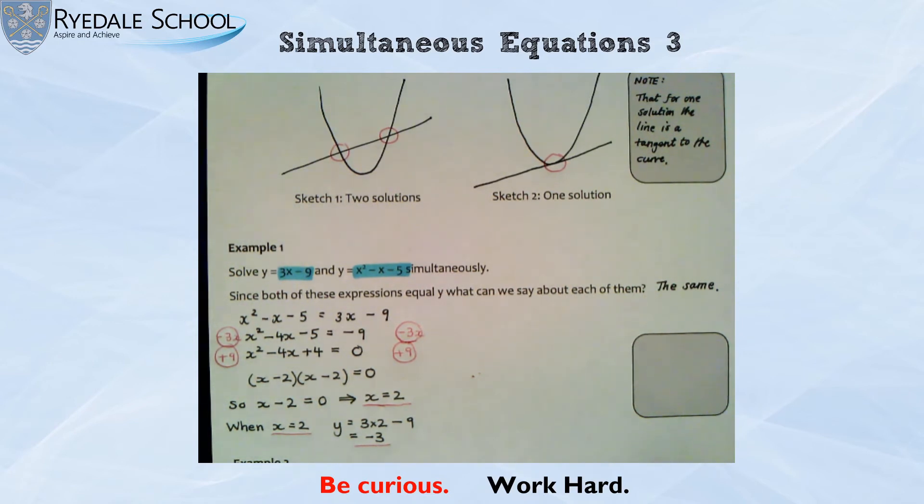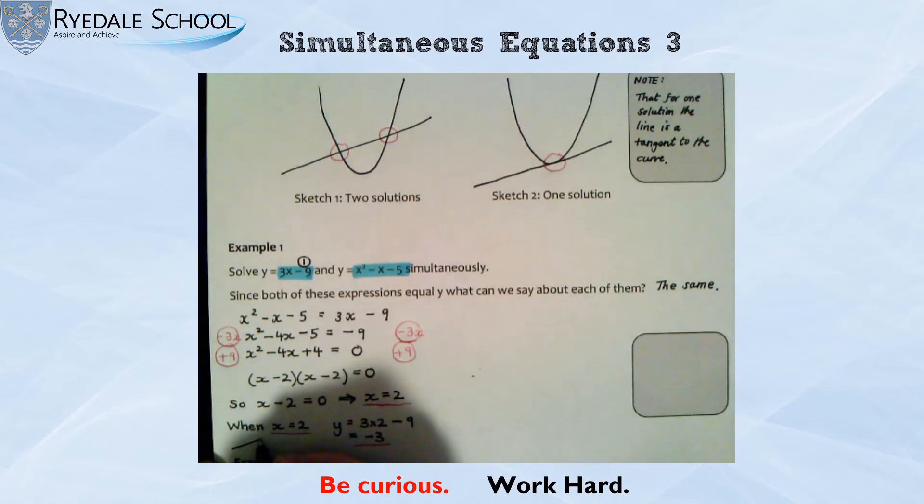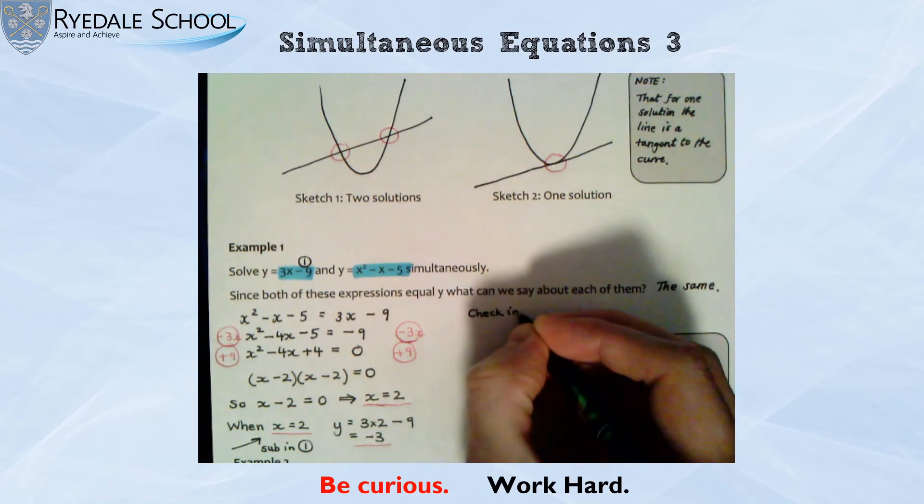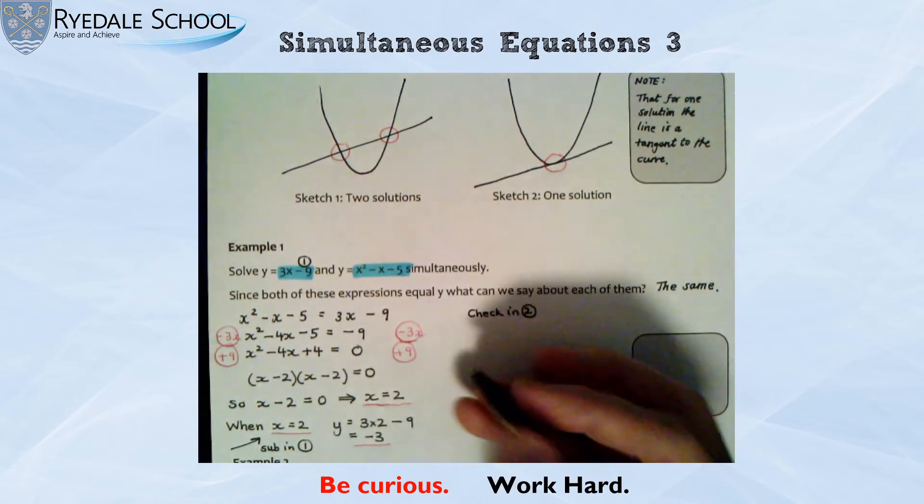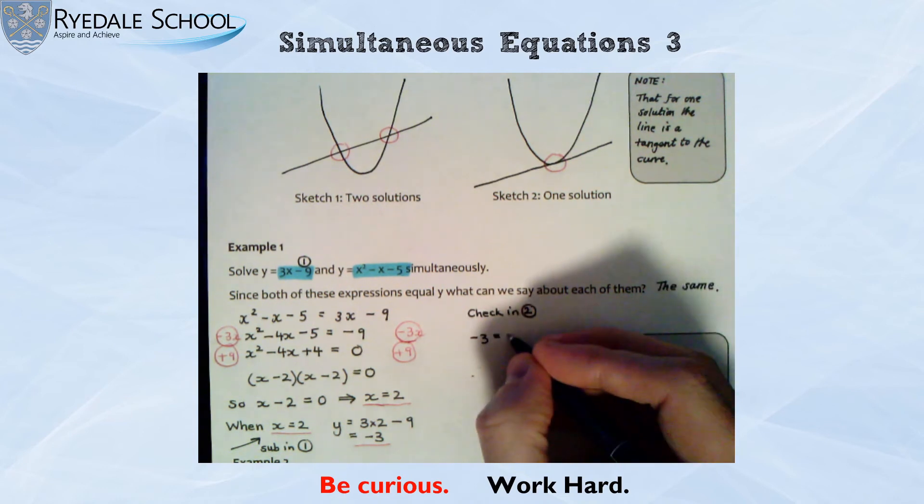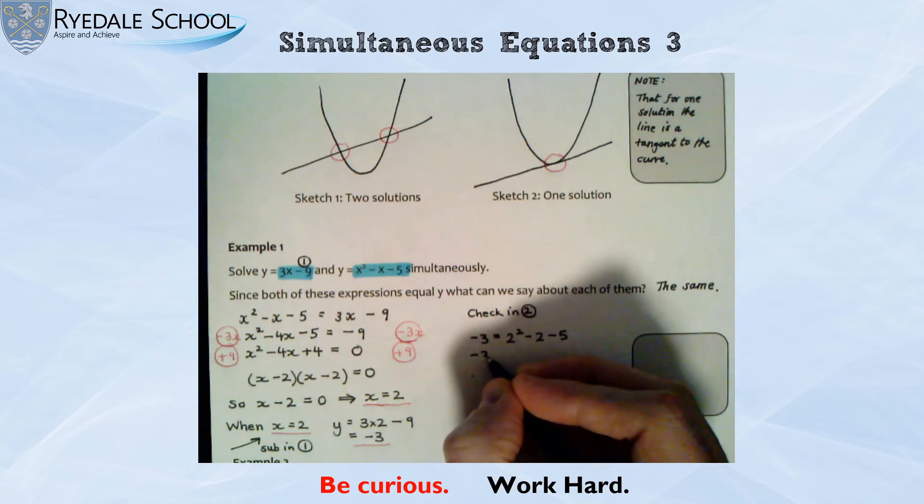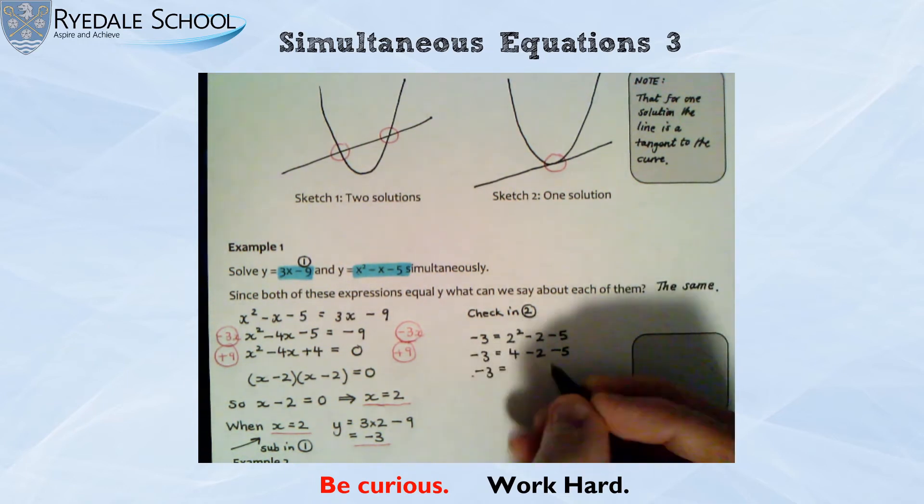Now, there is a way of checking in these ones. Since I substituted into this first one. I could even call that equation 1 if I wanted to. And I could say that this was a substitution in 1. I can do a little checking too. So I've got that when x is 2, y should be negative 3. So let's see if that's right. Negative 3 for the y equals 2 squared. Take away 2. Take away 5. Let's see if this is right. 2 squared is 4. Take away 2. Take away 5.